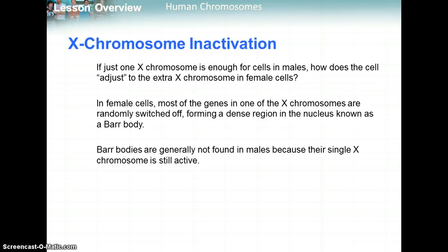Another interesting phenomenon is X chromosome inactivation. Since just one X chromosome is enough for cells in males, how does the cell adjust to the extra X chromosome in females? In female cells, most of the genes in one of the X chromosomes are randomly switched off, forming a dense region in the nucleus known as a Barr body. Barr bodies are generally not found in males because they only have one X chromosome and need all those genes to be expressed.